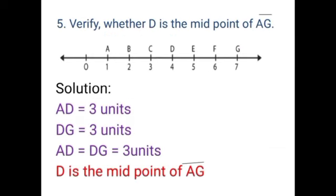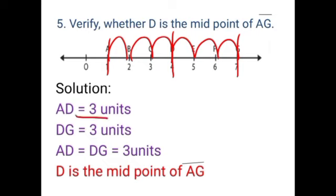See the fifth question. Verify whether D is the midpoint of line segment AG. This is line segment AG. Now we have to prove whether D is the midpoint of AG. First of all, the distance between AD is 1 unit, 2 units, 3 units. The distance between AD is 3 units. And the distance between DG is 1 unit, 2 units, 3 units. The distance between AD and DG is equal. So D is the midpoint of the line segment AG.